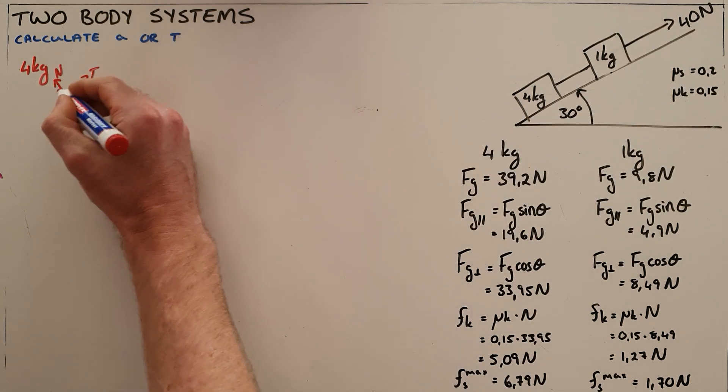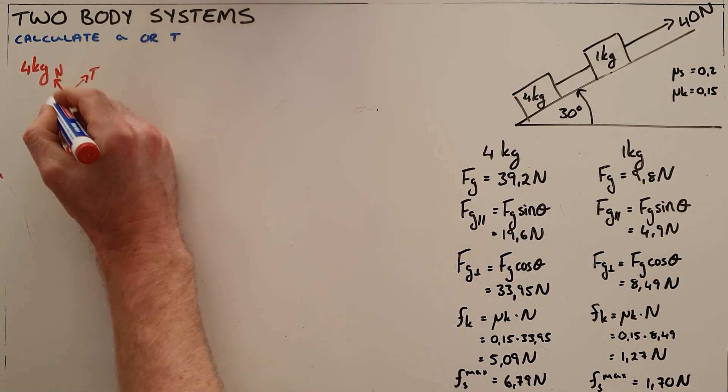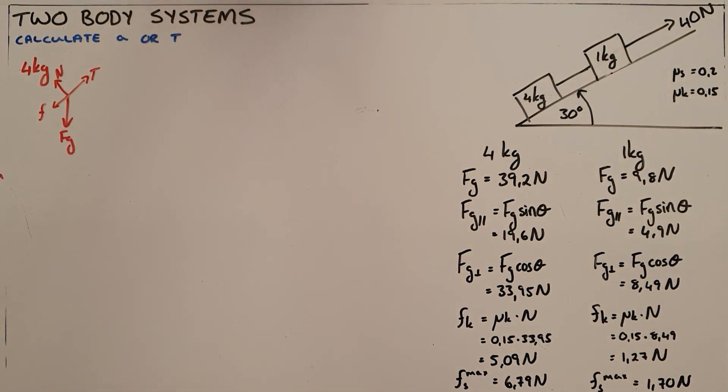We can guess in this one that the object is going to be moving up the slope and therefore there's going to be a frictional force acting down the slope.